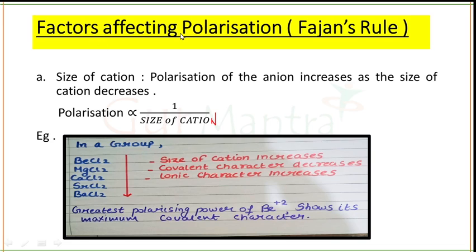The factors which affect polarization are known as Fajans' rules. Factor number one is the size of the cation. Polarization of the anion increases as the size of the cation decreases — meaning polarization is inversely proportional to the size of the cation. For example, in a particular group, consider the series BeCl₂, MgCl₂, CaCl₂, SrCl₂, and BaCl₂.